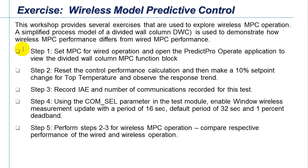In the first step of the exercise, we examine how model predictive control has been implemented on the divided wall column process. We'll then examine the performance index that has been implemented to measure control performance. We'll introduce a setpoint change into the top temperature control of the column and observe the control performance, measuring this in terms of integral of absolute error and number of communications recorded during the test.